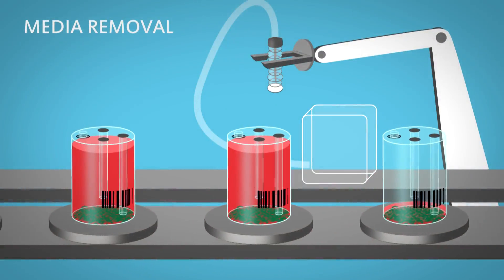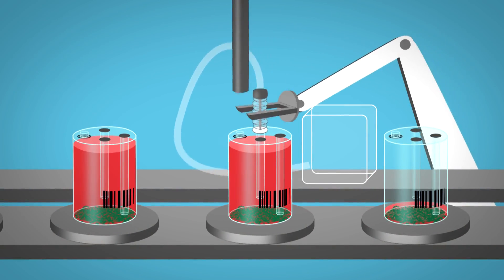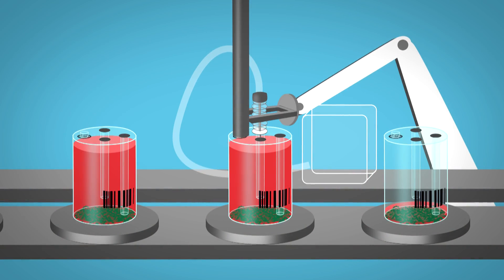When it is time to collect the cells, the G-REX device is moved from the incubator into the cell processing room. Due to the unique configuration of the G-REX, which allows the cells to grow undisturbed at the bottom of the device...